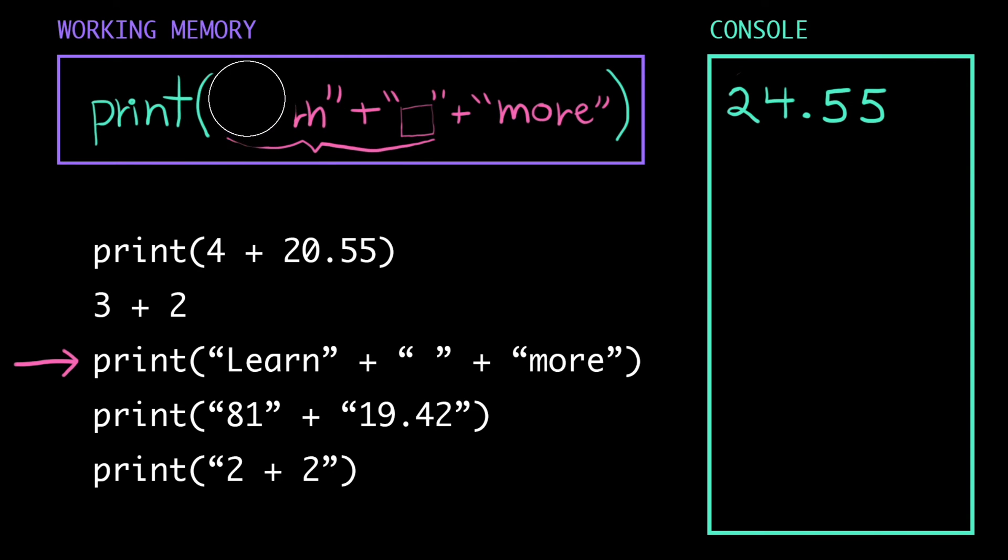First, it evaluates the expression learn plus space. Now when we add strings, remember that we are concatenating, we are smushing together. So we get the string learn space. Then we add the string more. We concatenate and we get learn space more. We're down to a single value, so the computer peeks outside the parentheses, sees that we want it to print that value, and it prints learn space more in the console. Finally, it clears its working memory and it moves to the next line.